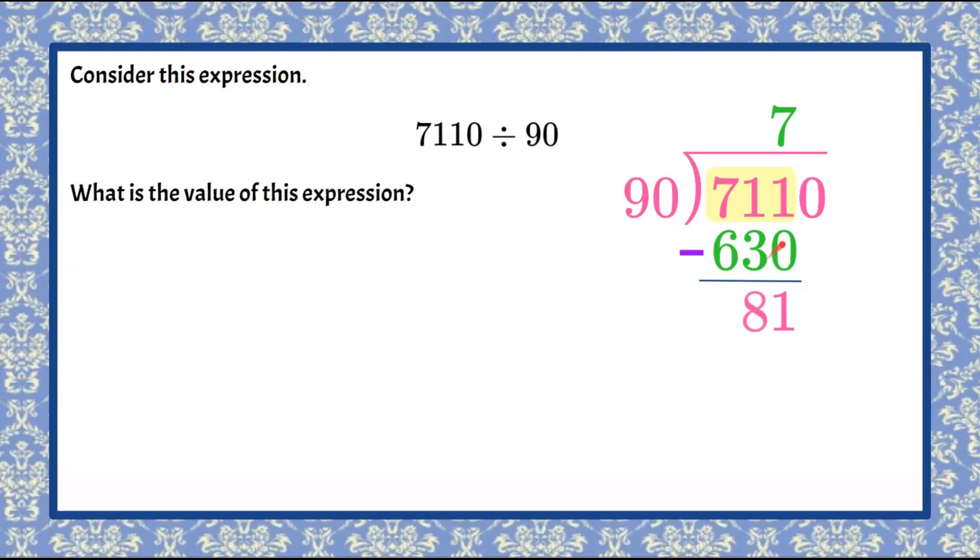Now to continue dividing, we need to bring down this zero. So now we have 810 that we're dividing by 90. I can say nine times nine is 81. Add my zero: 810.